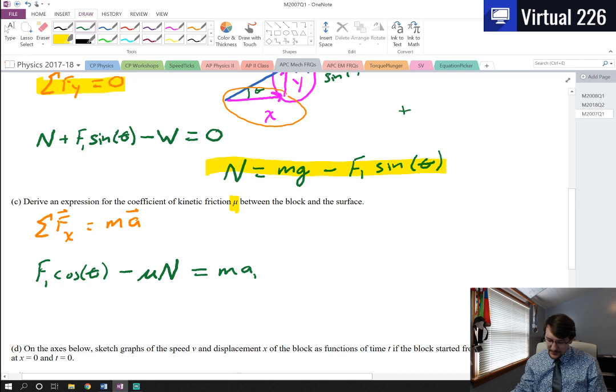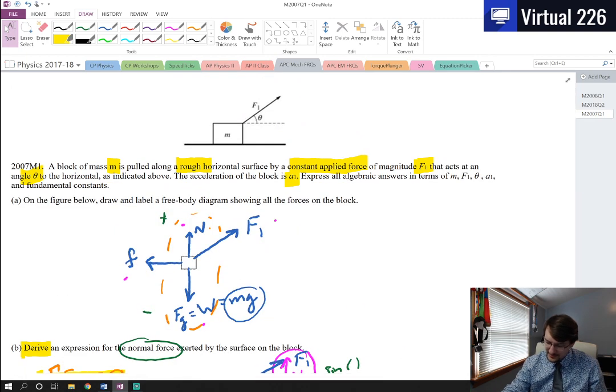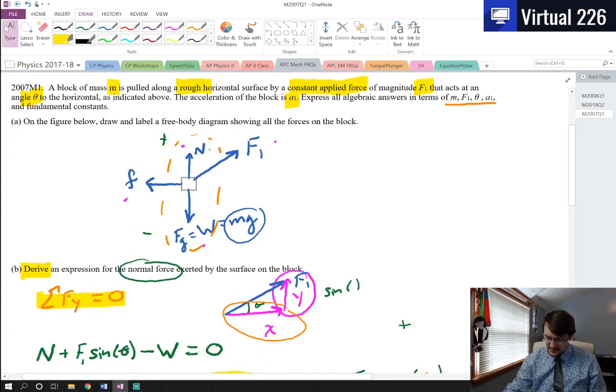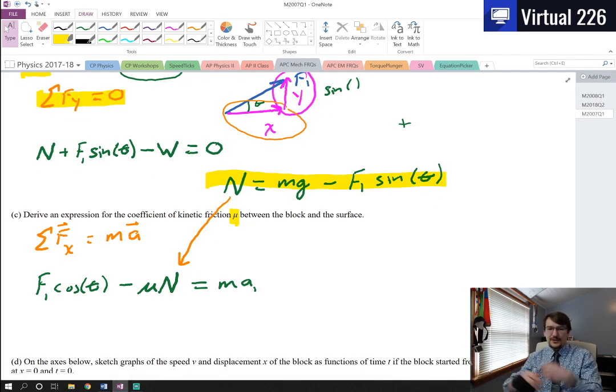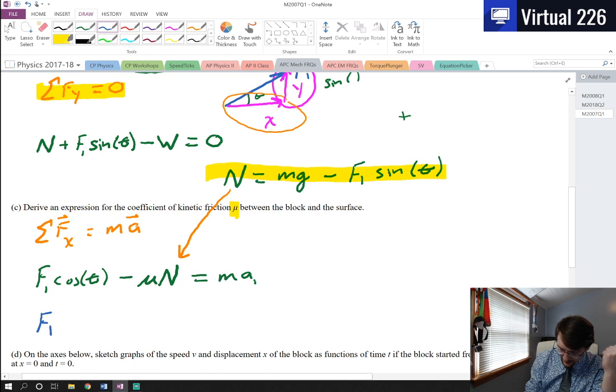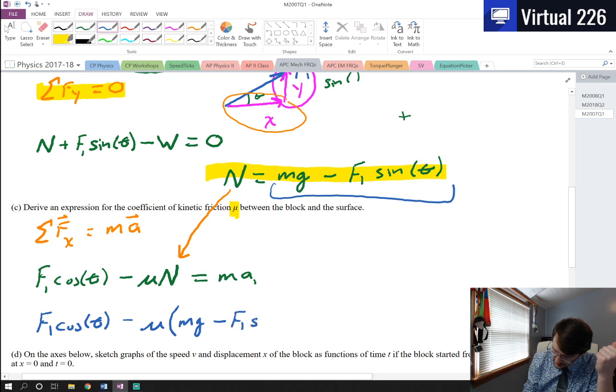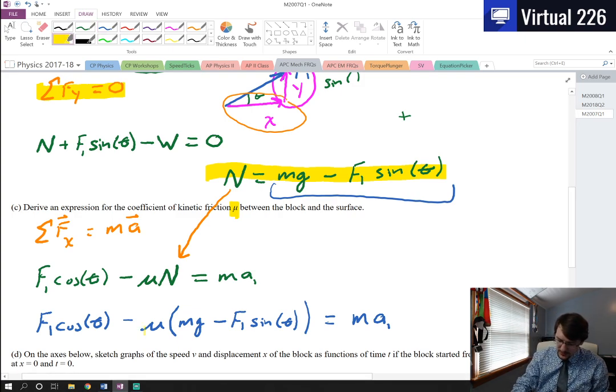So all I have to do now in order to solve for mu are two things. One, I have to plug in a value of the normal force into this. And the reason why I have to do that is they've asked us in this problem to only use these constant terms, M F1, theta, A1, and then constants. So I'm not allowed to use the normal and just leave it like that. I've got to do a little bit more math here. So what I have to do instead is rewrite this as F1 cosine of theta minus mu. And then I need to plug in all of this. So there's our M G minus F1 sine of theta. And that equals M A1.